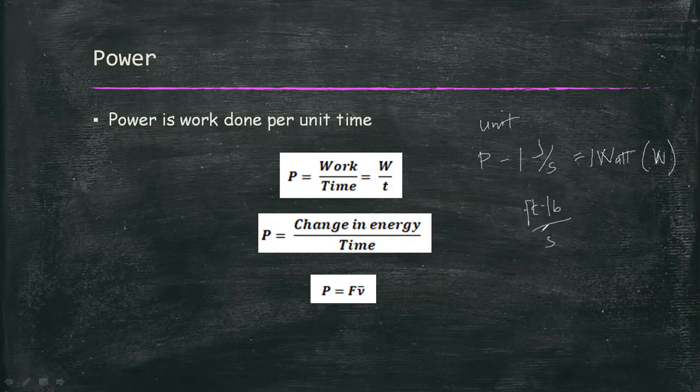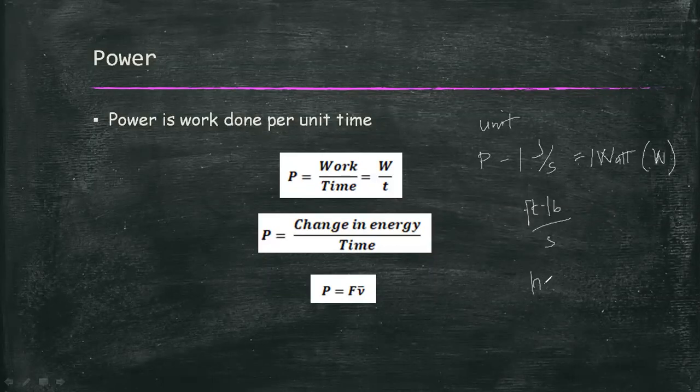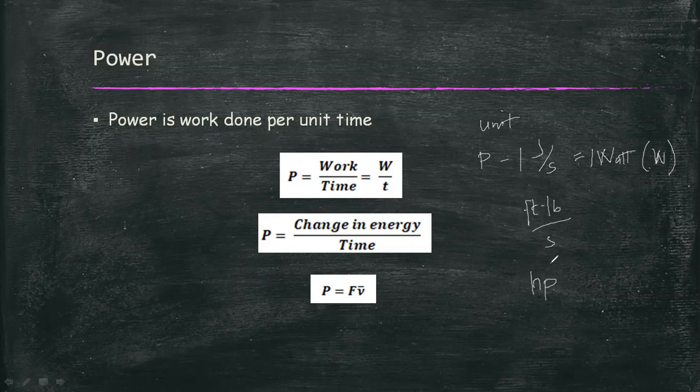Although the familiar horsepower unit is used frequently for specifying the power generated by electric motors, another unit for power is horsepower or HP. One horsepower is equal to 550 foot-pound per second, which is also equal to 745.7 watts.